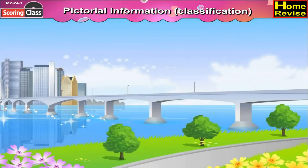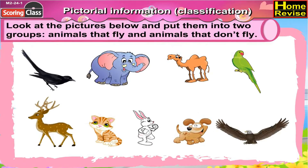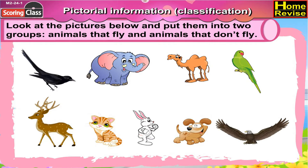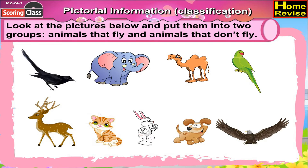Pictorial information classification. Look at the pictures below and put them into two groups: animals that fly and animals that don't fly. In order to classify between the animals that fly and animals that don't fly, let us draw a table.